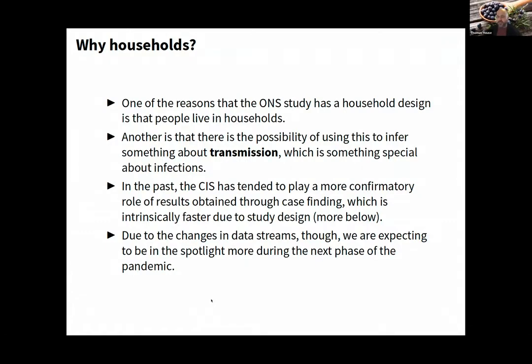Case finding tends to be faster because it's a measure of incidence. The ONS study played a more confirmatory role and doesn't suffer from sampling biases of test and trace, which can be quite considerable. As test and trace capacity is wound down, it's more important to look at these data for first estimates.